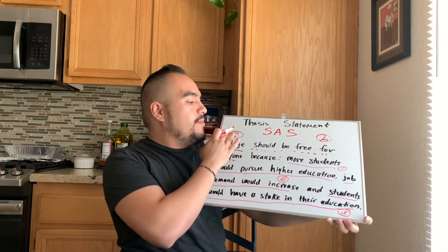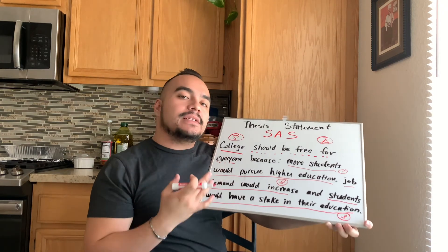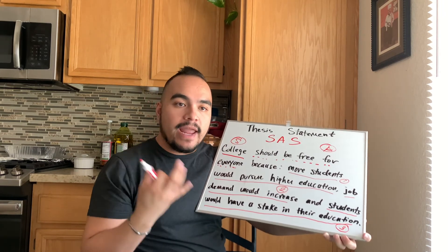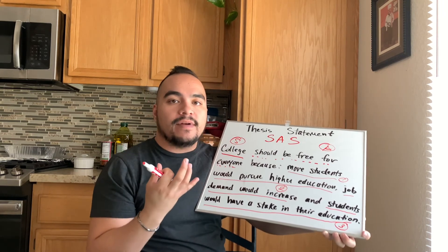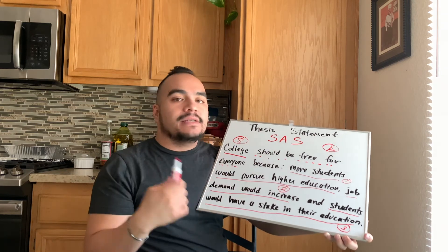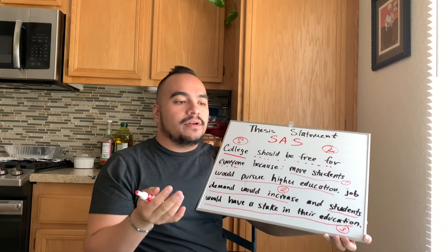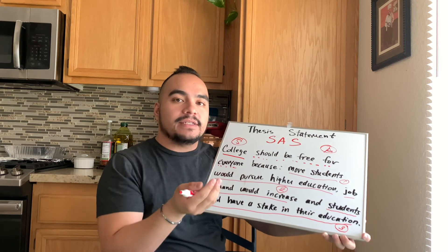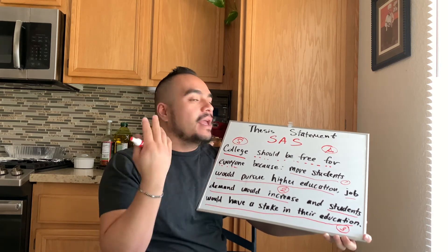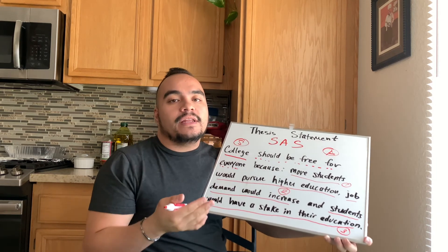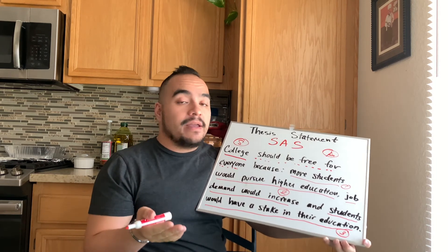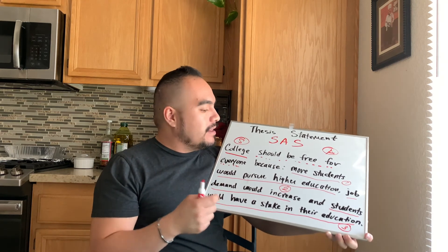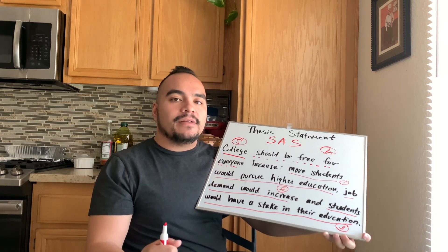So again, the three parts of a thesis statement include the subject — the thing that you're talking about, the main point. The argument is what your position is that you're taking on this thesis statement. And finally, the supporting details — you can't make an argument without supporting it. And those are the main points of a thesis statement.